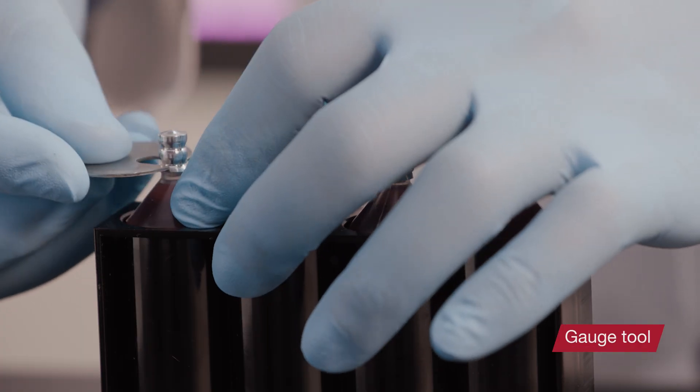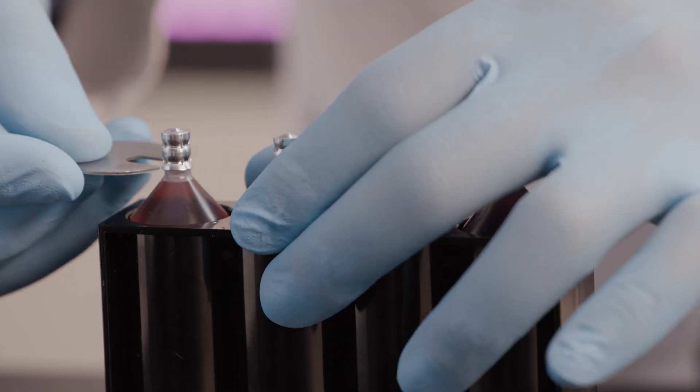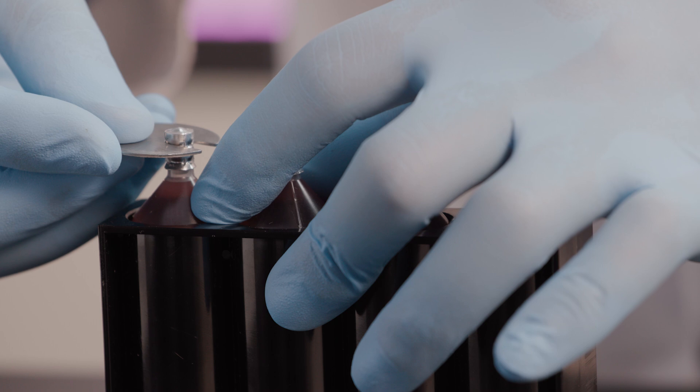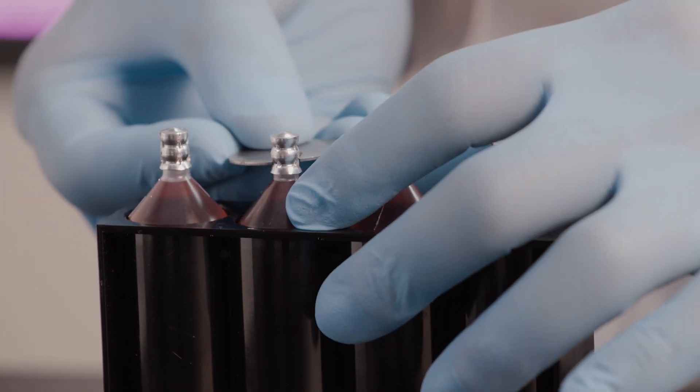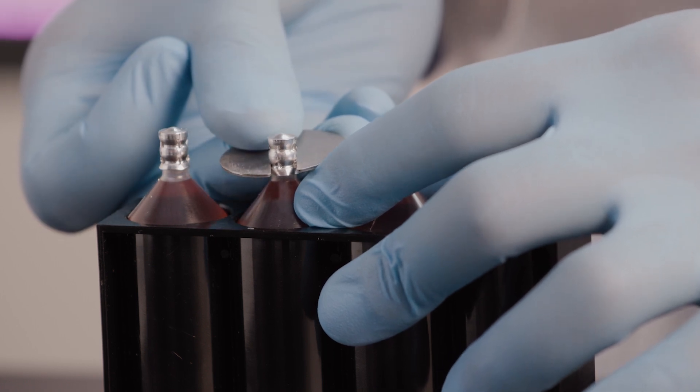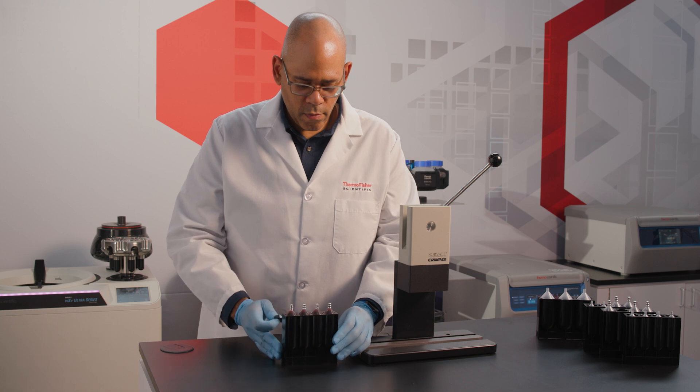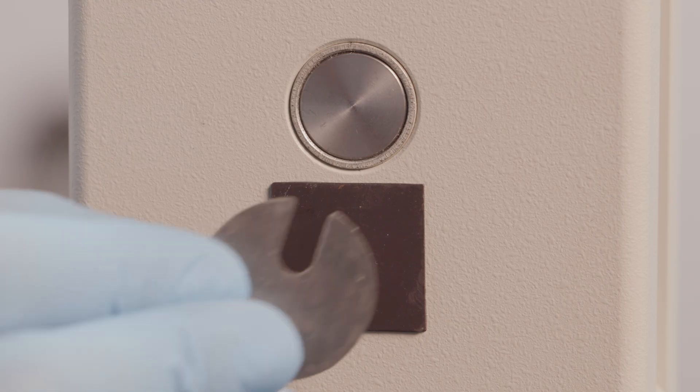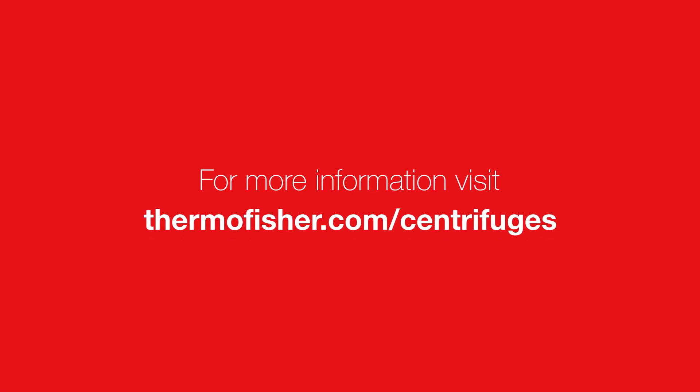Use the special gauge supplied with the crimper to periodically check the seals and verify proper crimper function. When a tube is properly sealed, the slot in the gauge should fit snugly around the narrow crimped portion of the aluminum cap. Use the magnet on the back of the cam housing to safely store the tool.